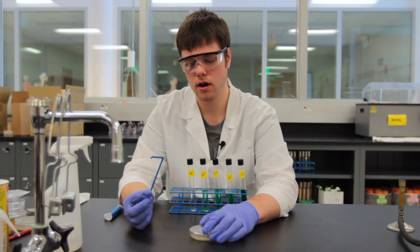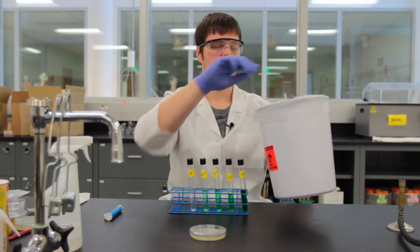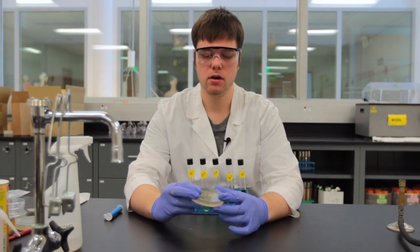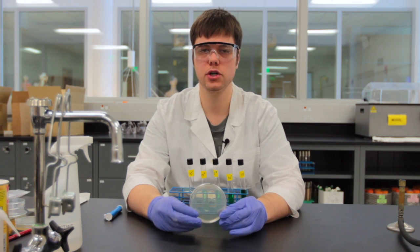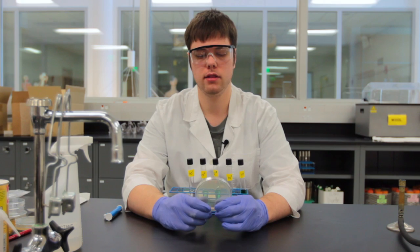We will cap our plate up, take our spreading stick and place it in the biohazard bin. We now have a plate with a 10 to the negative 3 dilution on it. We'll then incubate these appropriately in the incubator.